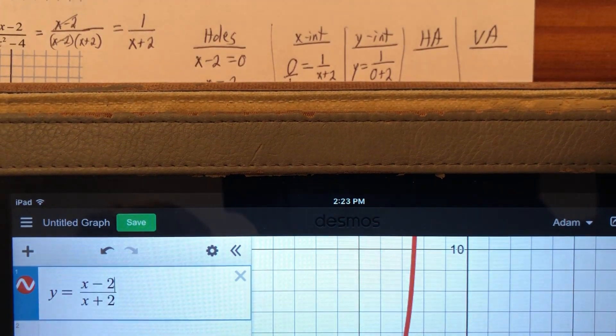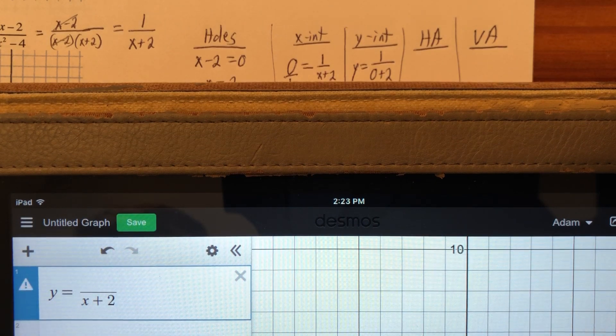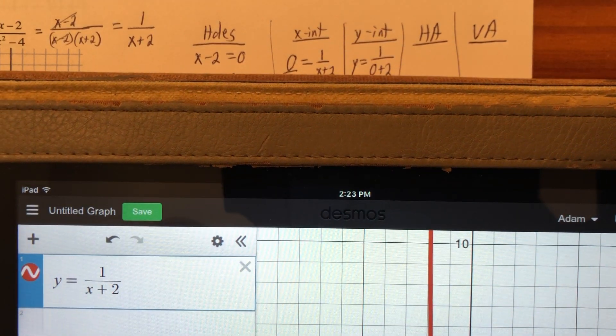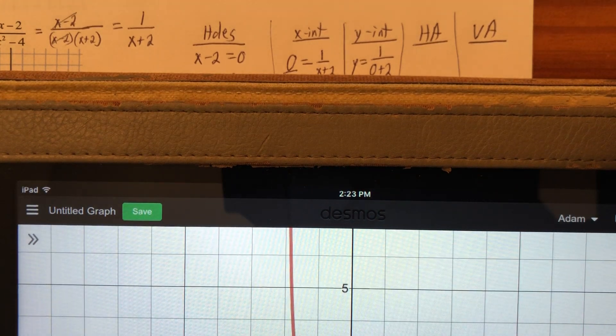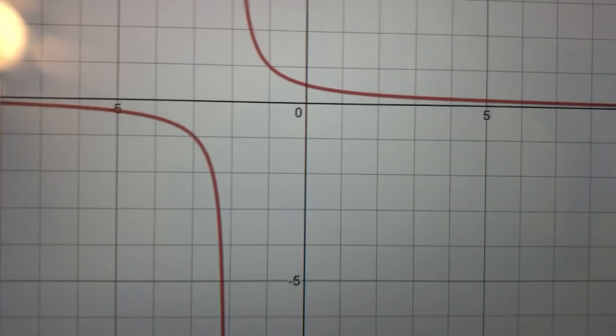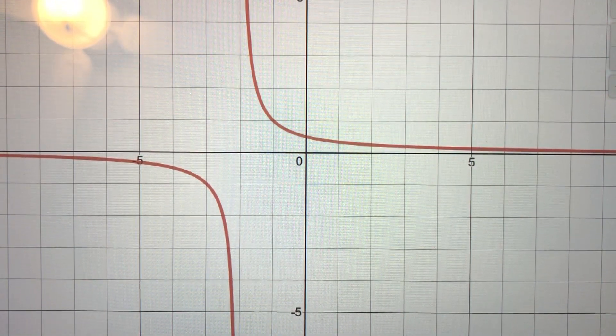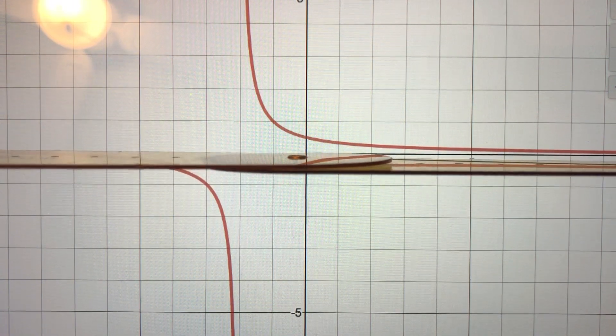So I'm going to have 1 over x plus 2. There we go. This is what it looks like. And I'm wondering what the horizontal asymptote is. And there is a logical place to see where it kind of leveled off. And it's right here.